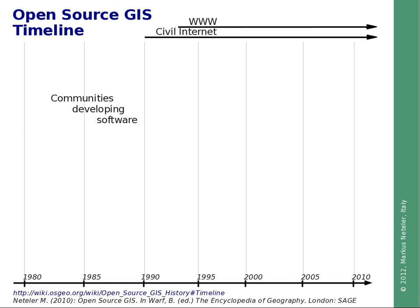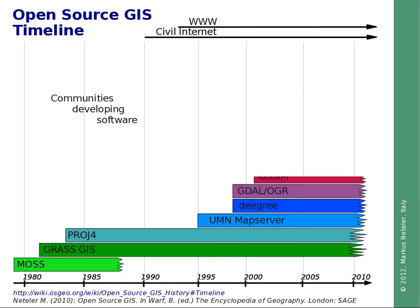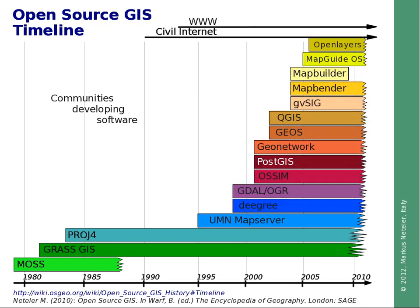Looking at the timeline, we start in the early 1980s with two or three systems: MOS, GRASS GIS, and the PROJ.4 library for reprojection, which is used in different software projects even today. Two of those survived and are continuously developed. Then with the advent of the civil Internet, things changed quite a bit. With the WWW and collaborative software development tools, starting from 1995, a series of new projects were established. Virtual communities formed, leading to these new software projects.